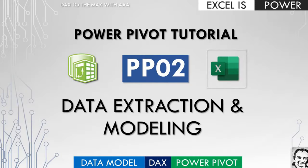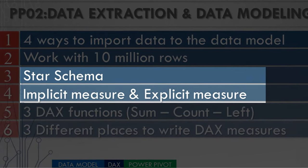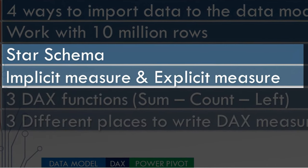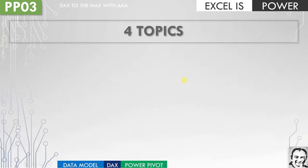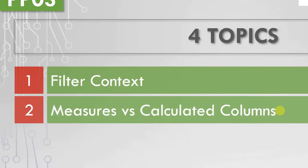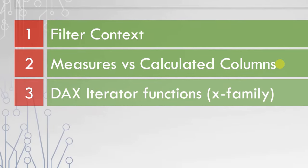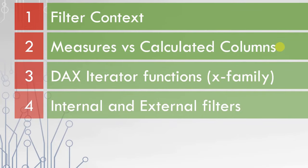If you are struggling to get your head around DAX iterator functions, this video is for you. If you need to digest the concept of filter context, as well as the difference between internal and external filters, please watch this video till the end. In this video PP03, we are going to discuss four topics: filter context, measures versus calculated columns, DAX iterator functions which I call the X family, and finally internal and external filters.